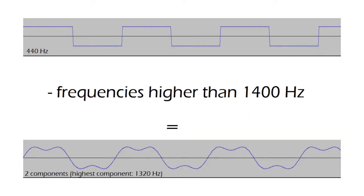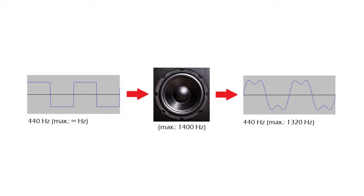If by means of a filter we remove all frequencies higher than 1400 Hz from this square wave, the result would be the two-component wave made up by a 440 Hz wave and a 1320 Hz wave, since the rest of the components would be higher than 1400 Hz and therefore would be removed. This would happen, for example, if we try to reproduce a 440 Hz square wave through a speaker that can only reproduce up to 1400 Hz.